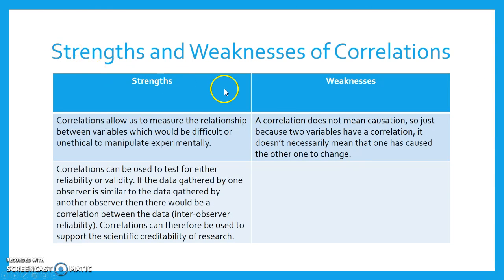Strengths and weaknesses of correlations. The strengths of correlations are that correlations allow us to measure the relationship between variables, which would be difficult or unethical to manipulate experimentally. Correlations can be used to test for either reliability or validity. If the data gathered by one observer is similar to the data gathered by another observer, then there would be a correlation between the data, which is known as inter-observer reliability. Correlations can therefore be used to support the scientific credibility of research.